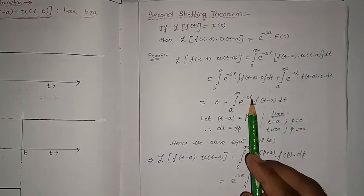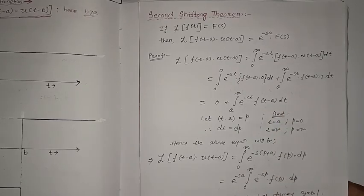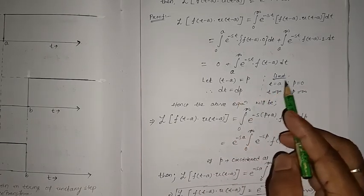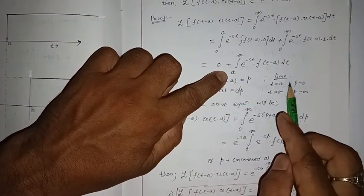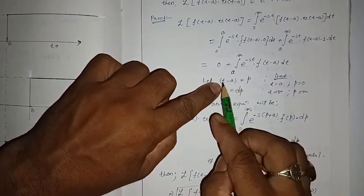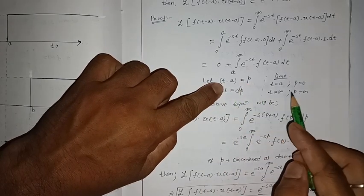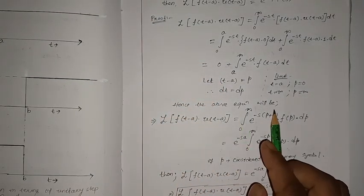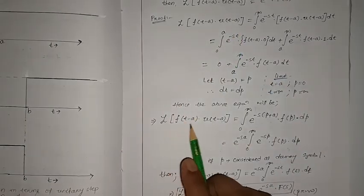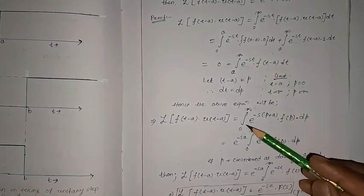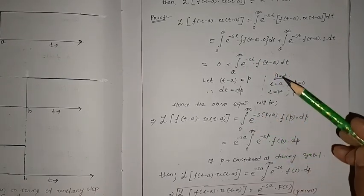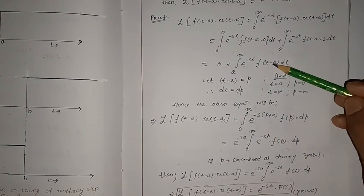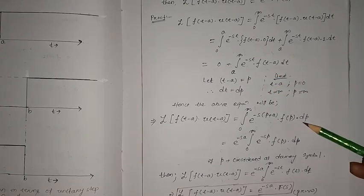Let t minus a equal p, so dt equals dp. When t equals a, p equals zero. When t approaches infinity, p approaches infinity. The equation becomes the integral from zero to infinity of e to the power minus s(p plus a) into f(p) dp, since t equals p plus a and t minus a equals p.